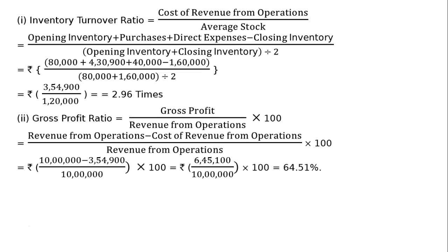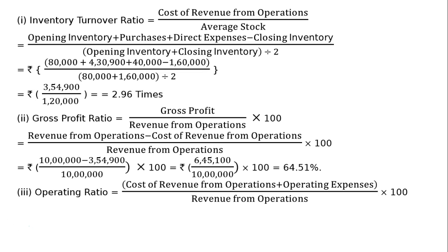That is 64.51 percent. The third part is operating ratio. Operating ratio is cost of revenue from operations plus operating expenses, whole divided by revenue from operations into 100.